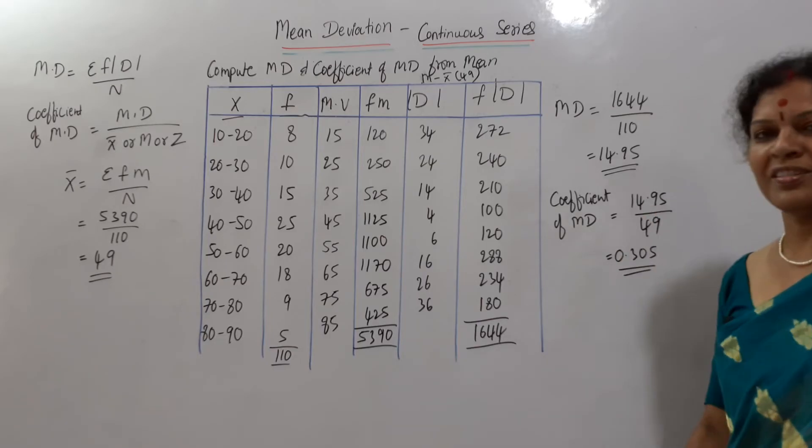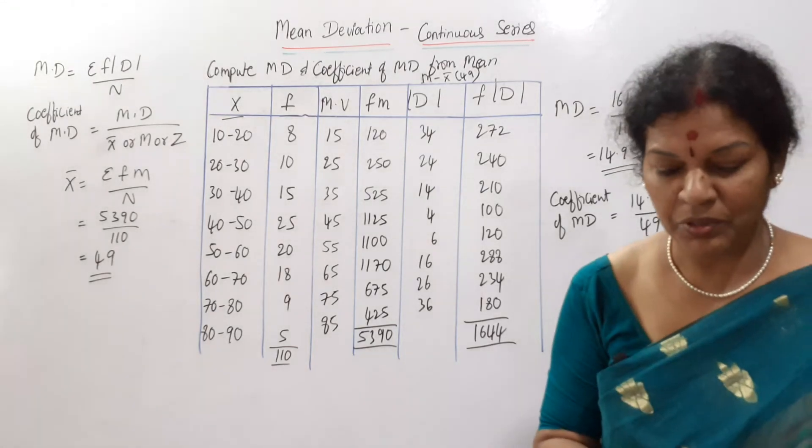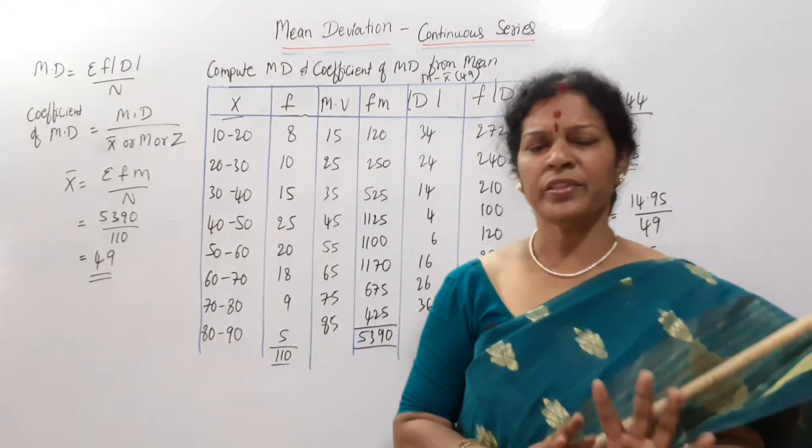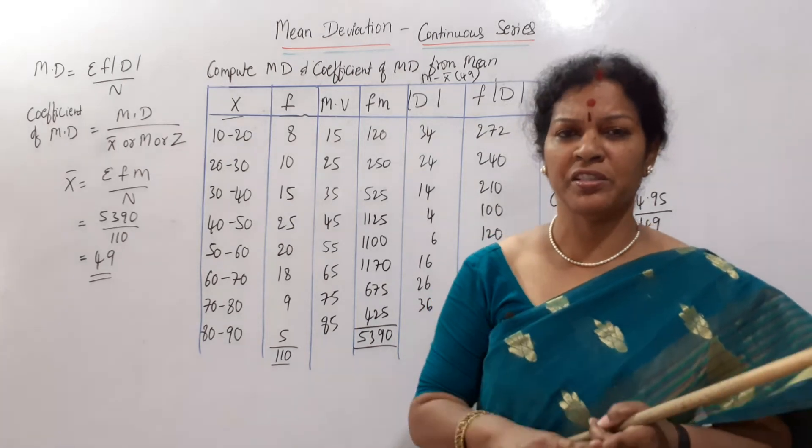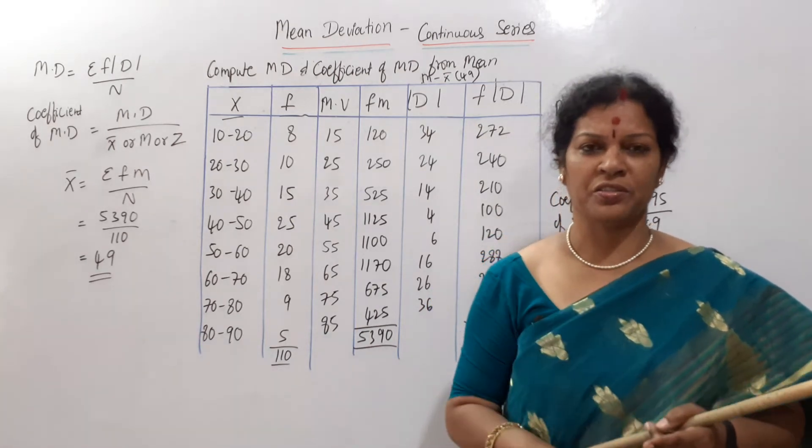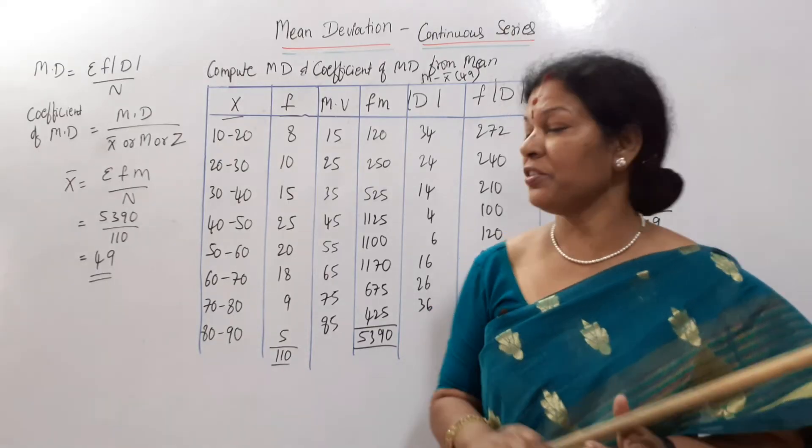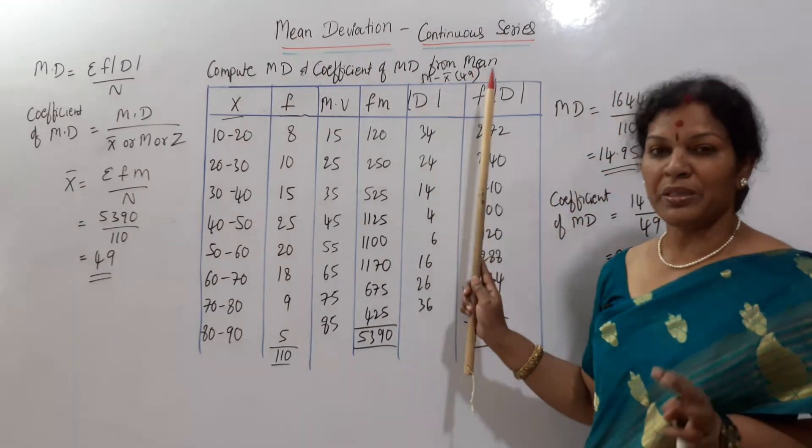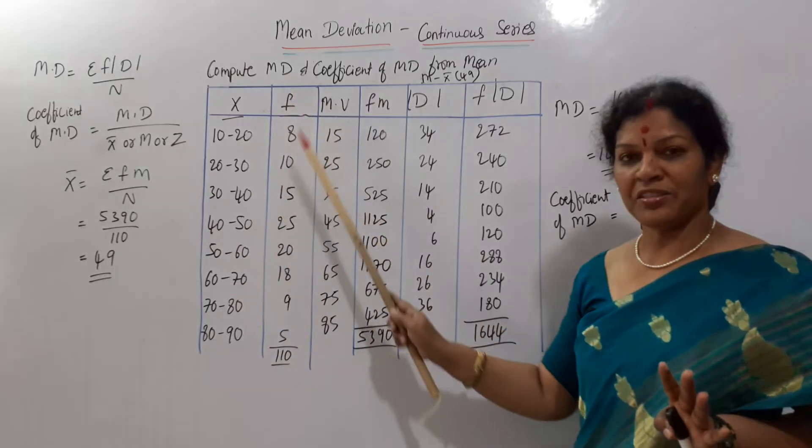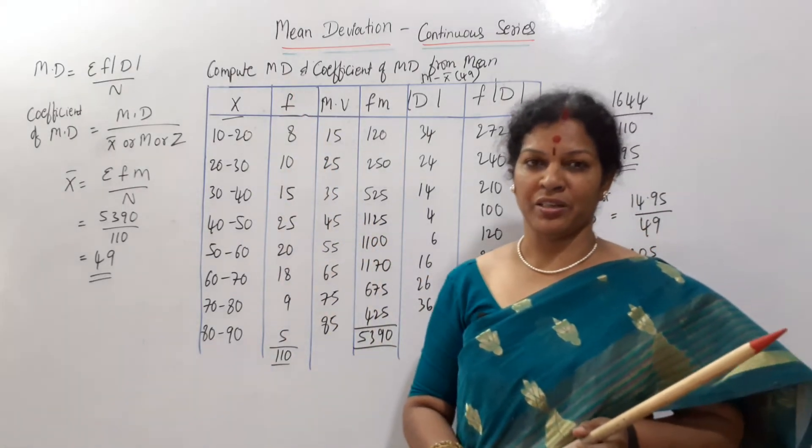That is it. Am I clear? Shall I give you recap? Nothing to worry whether it is individual series, discrete series or continuous series. Only the thing is from where we have to calculate the mean deviation. In this problem, from mean they said, data is given as x and frequency.